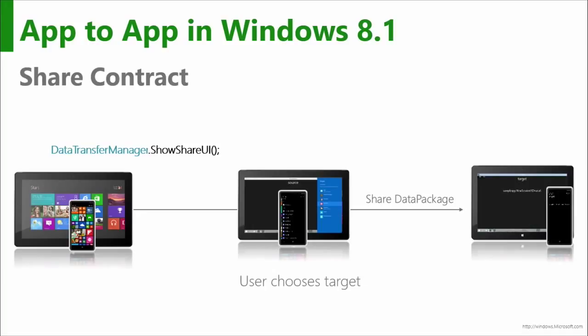That was by design. The other kind of decoupled way is what we call the share contract. The share contract allows a sender to throw out some content — a package of data or images — and lets the user decide where that content goes. Similar problem to protocol activation: shared with whom you don't have any control over. By design it allows the user to stay in control, but that doesn't satisfy everybody. That's Windows 8.